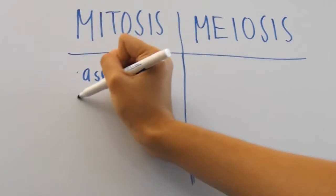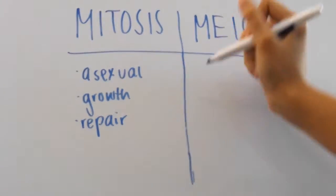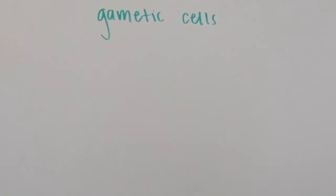Mitosis is used for asexual reproduction, growth, and repair. Meiosis is for a sexually reproducing organism since it produces gametic cells that have half the number of chromosomes as a regular body cell.